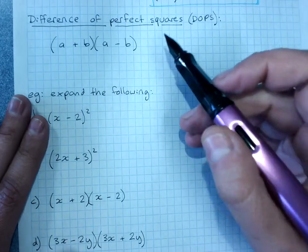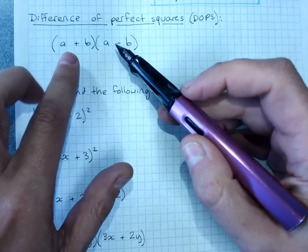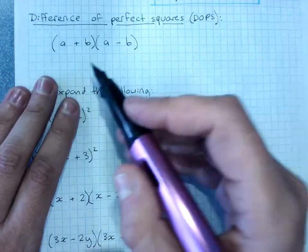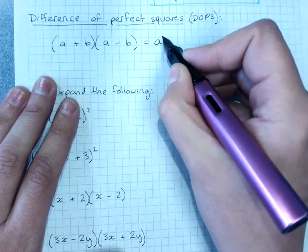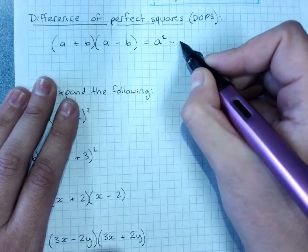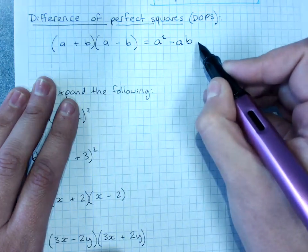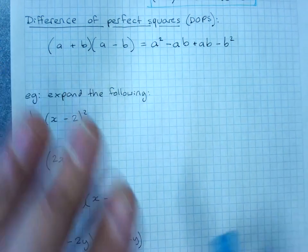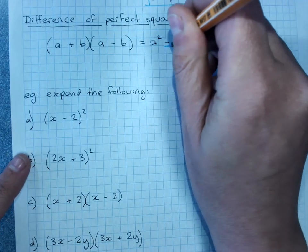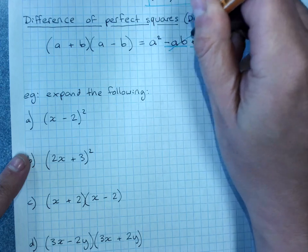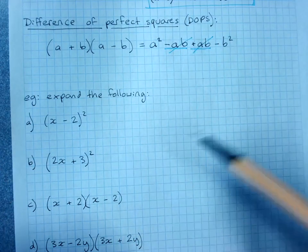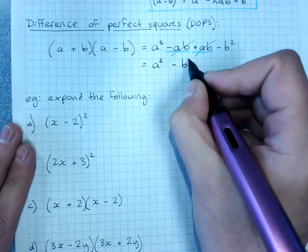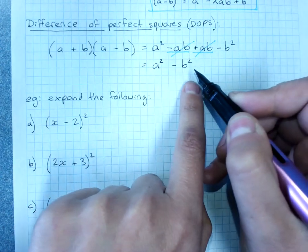Moving on to difference of perfect squares. So this would be perfect squares, except that one's plus and one's minus, and when we get the answer, you'll see why it's a difference of perfect squares. Let's expand it. a times a is a². a times negative b, negative ab. b times a, plus ab. b times negative b, negative b². You'll see we don't end up with exactly the same terms. We end up with the same terms, but one's negative and one's positive, and they cancel out. Plus ab minus ab is zero. What I'm left with is a² - b², and that is a difference of two perfect squares.